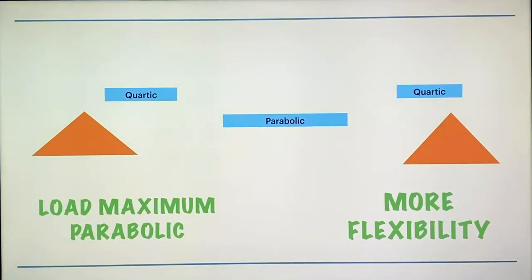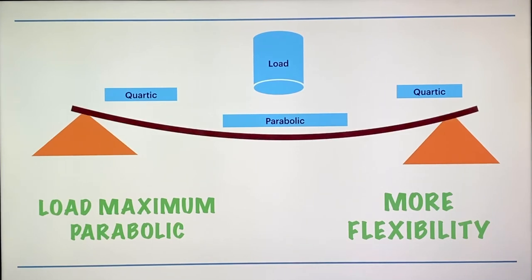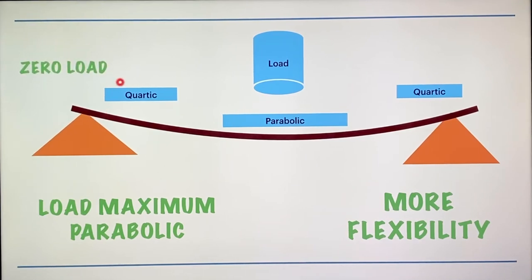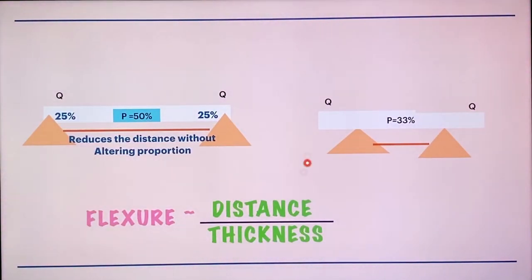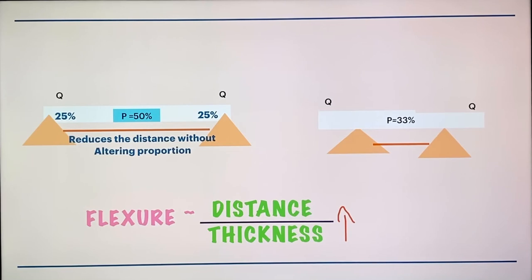So how can we achieve a rigid assembly? In this diagram you can see there are two supports and on them there is a bar. The central part is called the parabolic part and the end part is called the caotic part. The central part bears the maximum load while the caotic part bears zero load because it is near the support. As the parabolic part is bearing maximum load, it is more flexible. But we don't want a flexible assembly. According to the L-beam principle we can refer to this formula: flexure is directly proportional to the distance between the supports and inversely proportional to the thickness. So if we increase the thickness, our flexure will reduce, but this will make our assembly bulky, which we don't want.